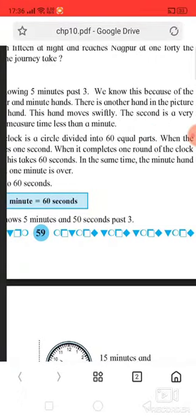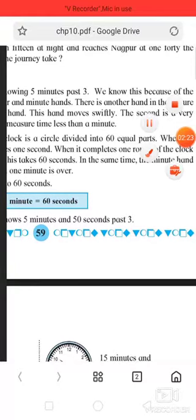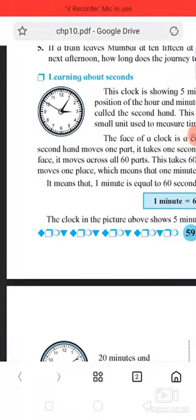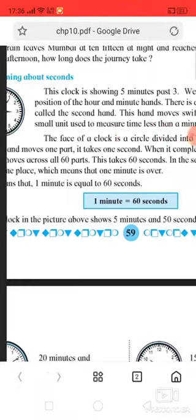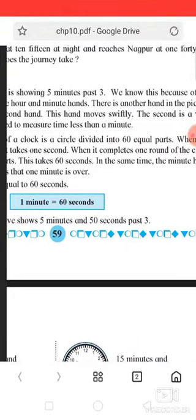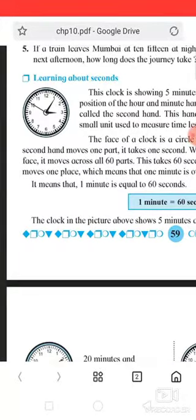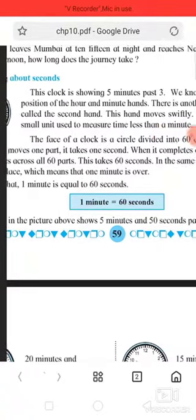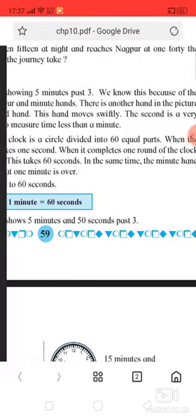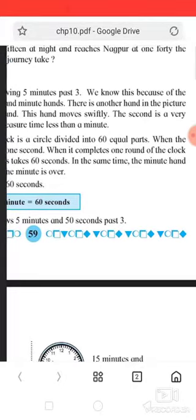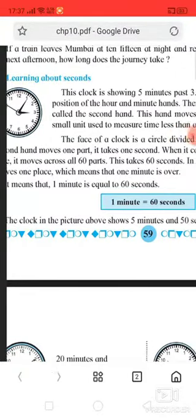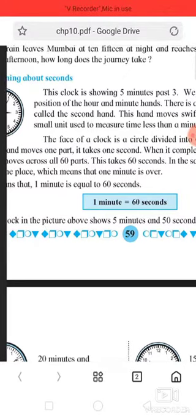When it completes one round of the clock face, it moves across all 60 parts. If the second hand moves full round, it means 60 seconds is over. In the same time, the minute hand moves one place, which means that one minute is over.